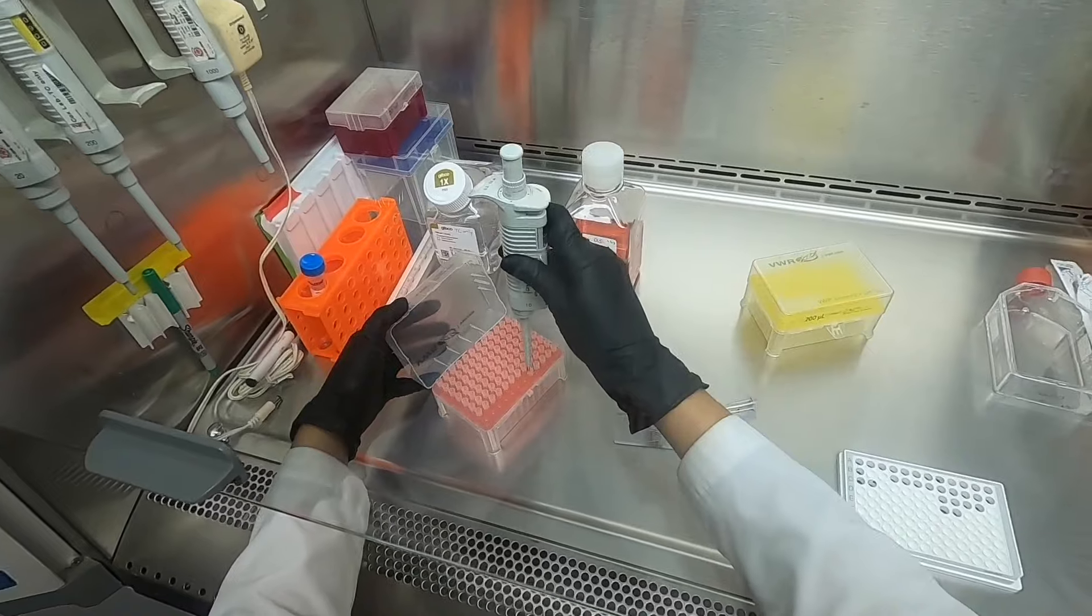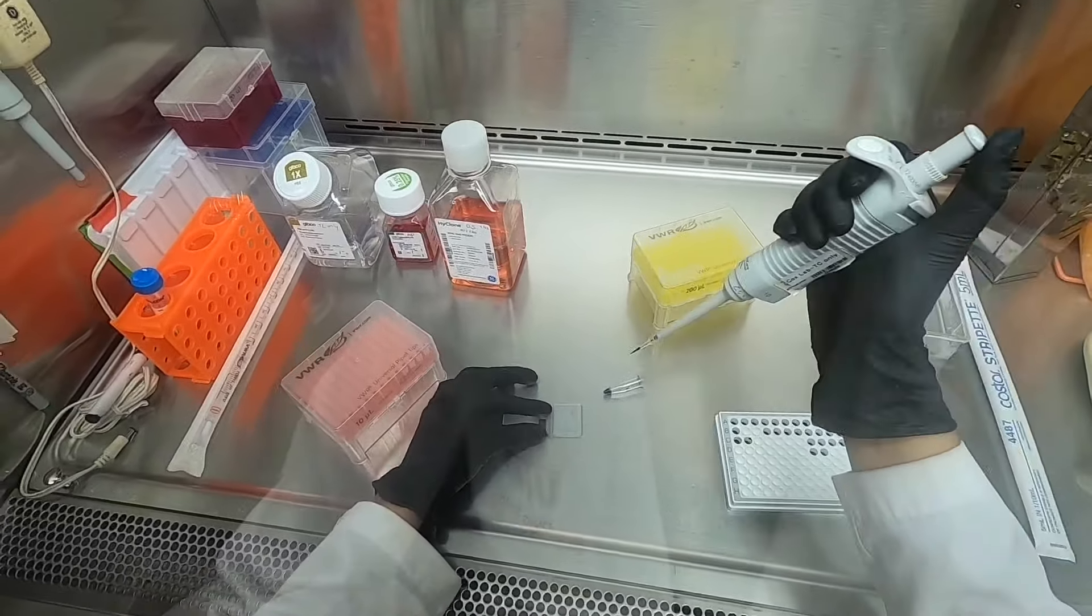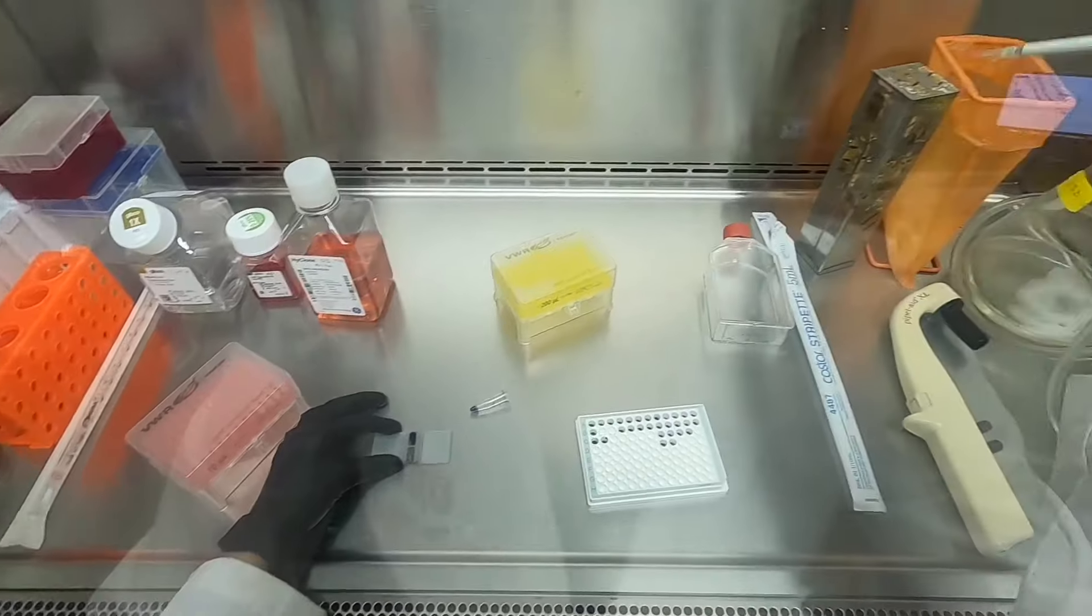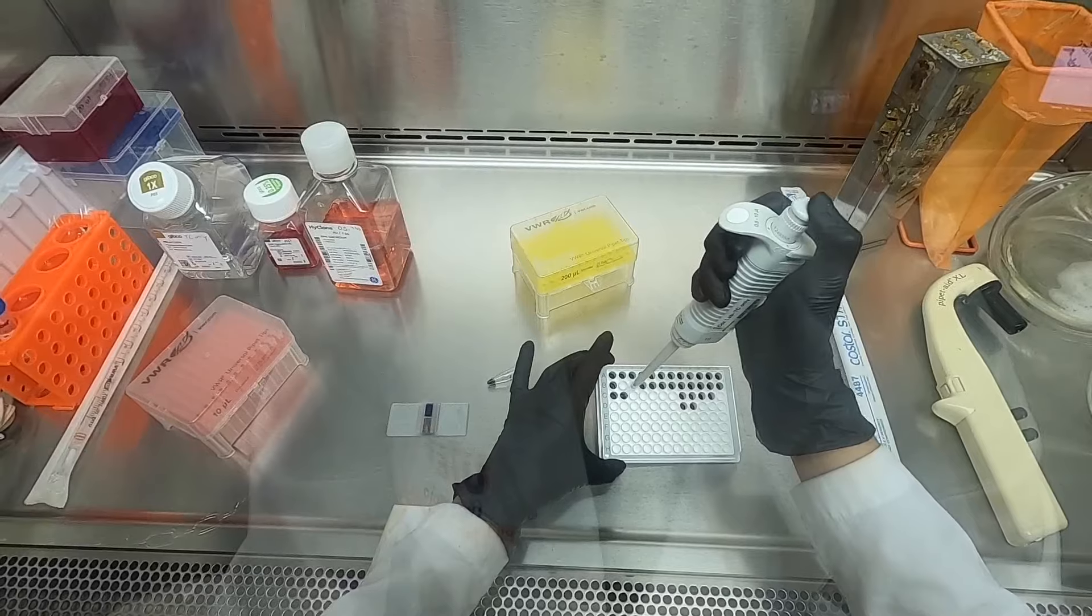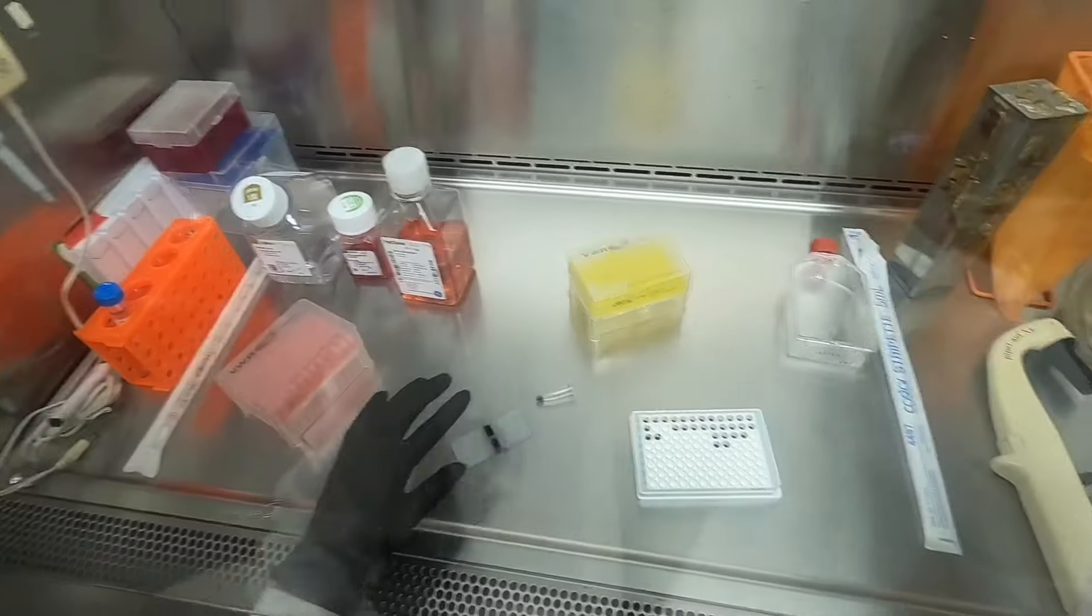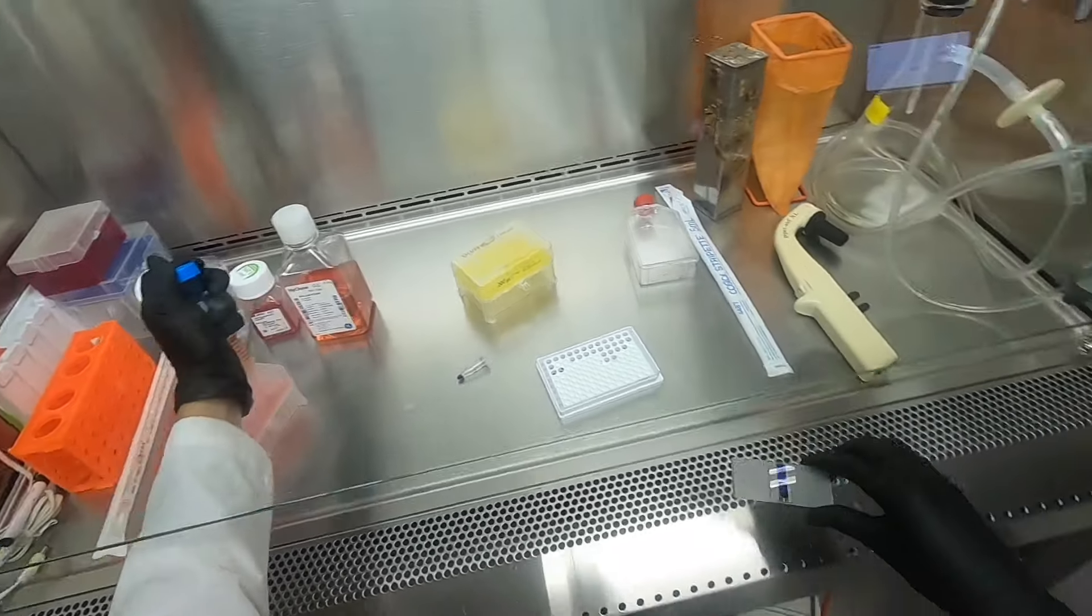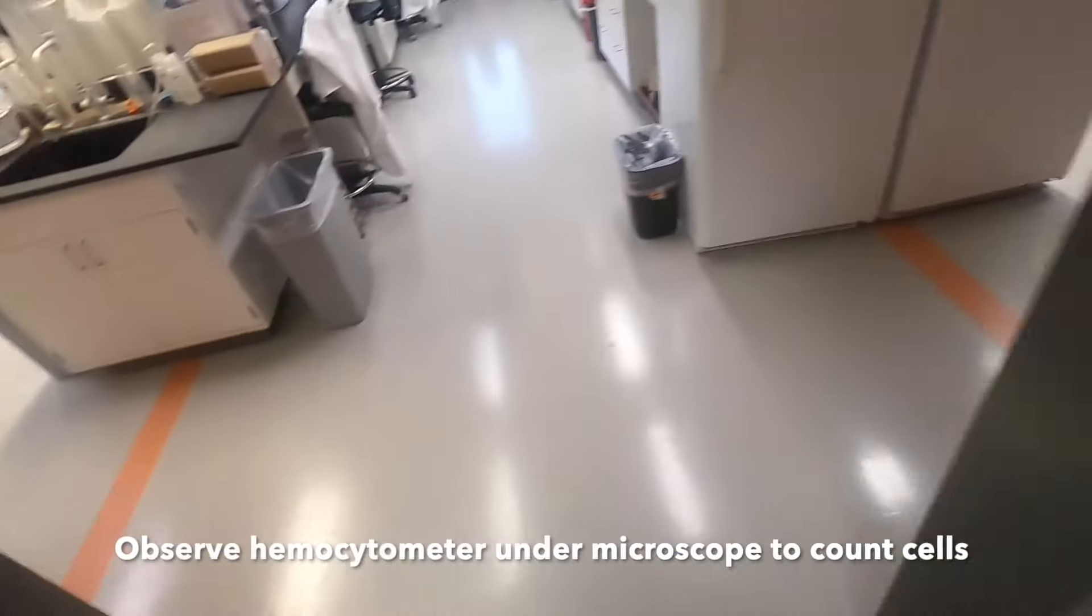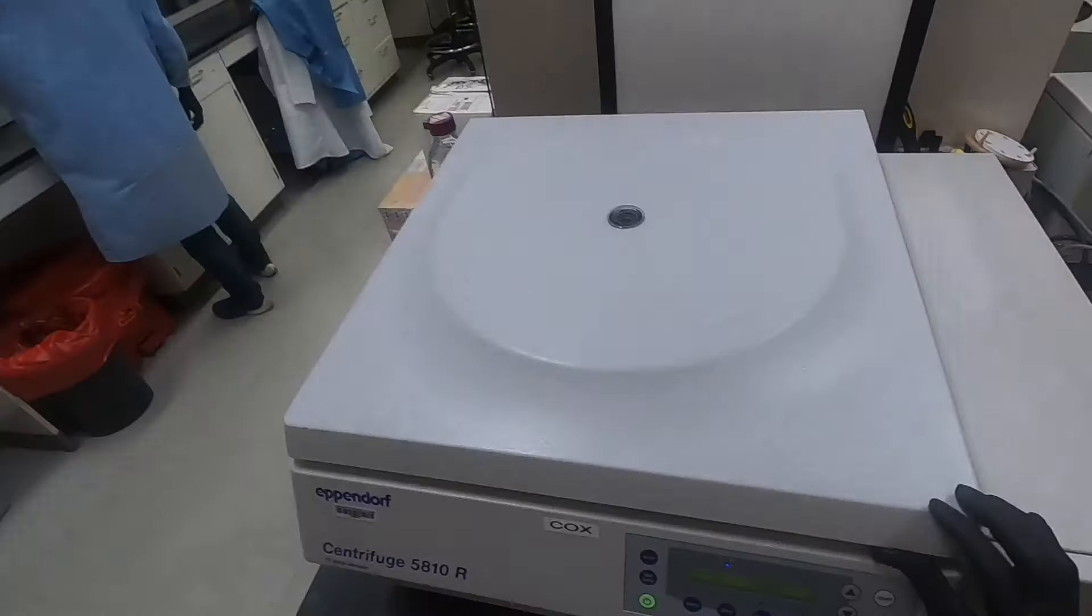Once the solution of cells and trypan blue has been mixed, we will aliquot 10 microliters into the chamber of a hemocytometer. This is simply done by releasing the liquid onto the edge of the hemocytometer. The liquid will move into the chamber through capillary action in between the glass and the hemocytometer. We are now ready to count our cells under the microscope. We can also centrifuge our conical tube in order to pellet the cells and remove the media that contains the neutralized trypsin.